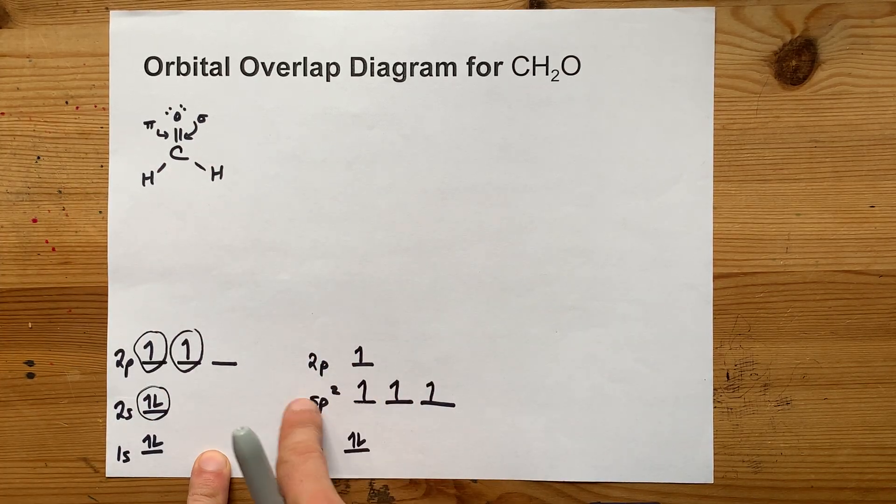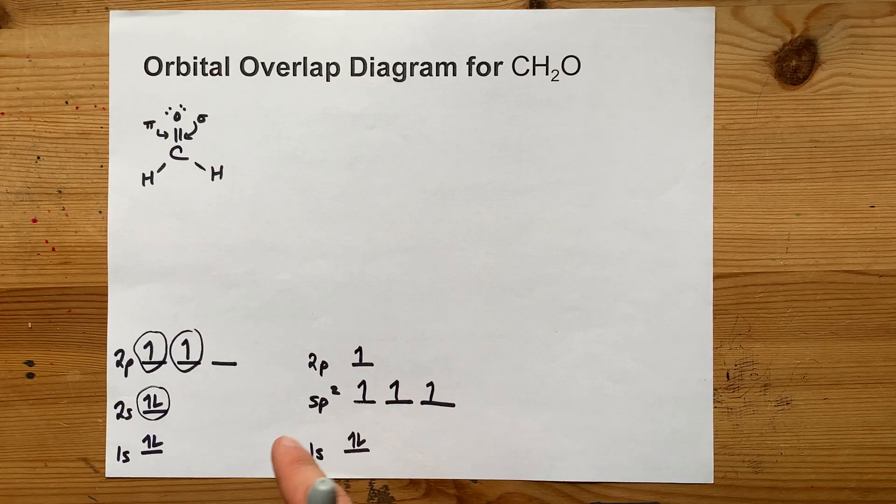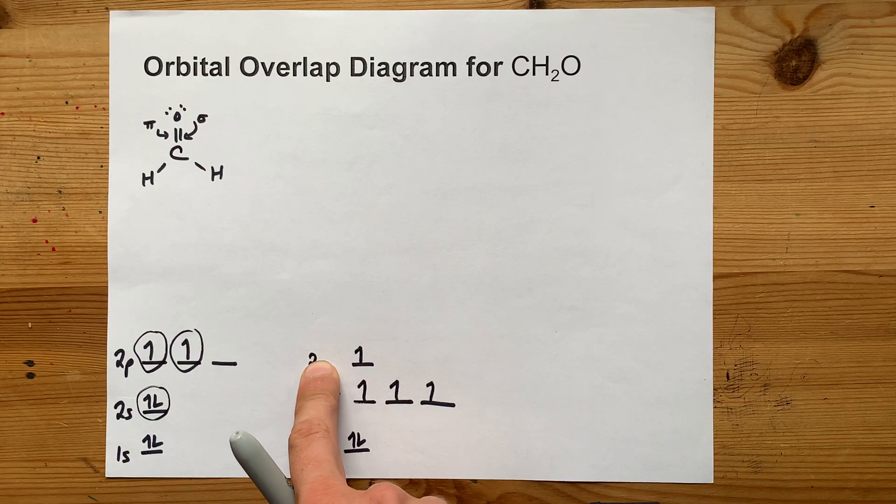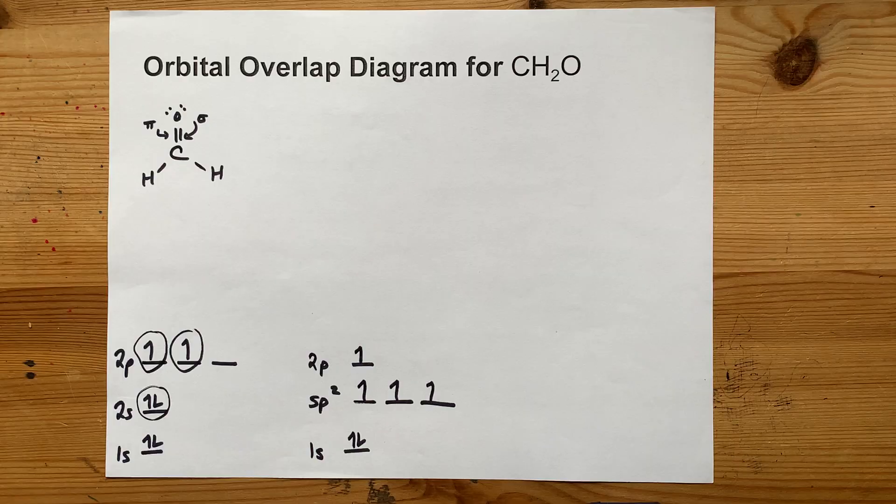This is here just to show you what the electron configuration is for carbon. You're going to make three sigma bonds, and you're going to leave one of the 2p's open for a pi bond.